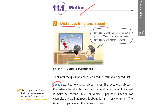Speed can be described as how fast an object moves. It is defined as the distance traveled by an object per unit of time. Usually we use meter per second and kilometer per hour as the units to measure speed.